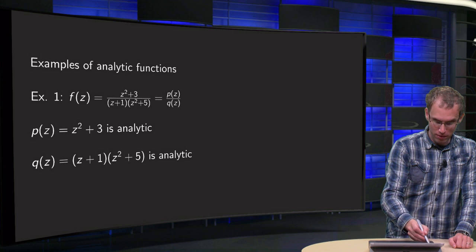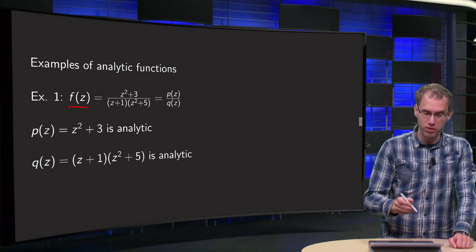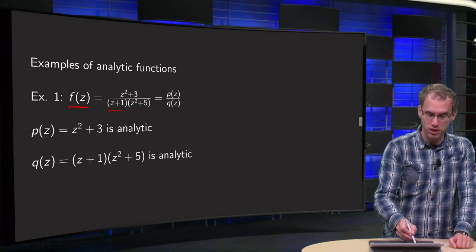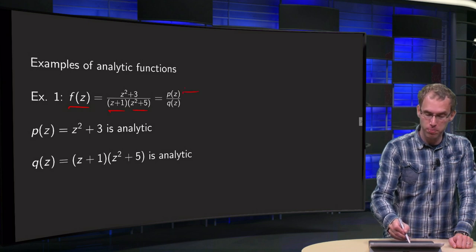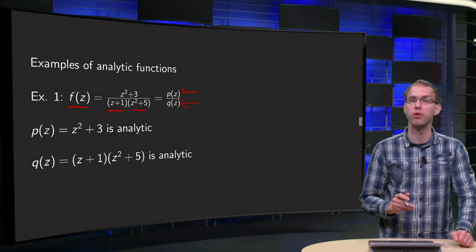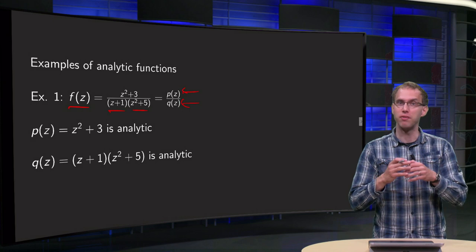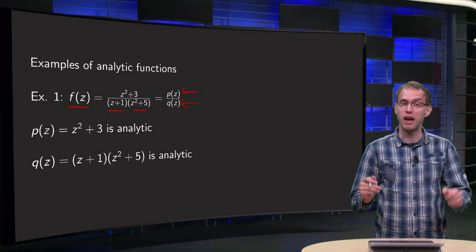If we have, for example, f equals z squared plus 3 divided by z plus 1 times z squared plus 5, that equals the polynomial p of z divided by q of z. Suppose that f is defined on its maximal domain.